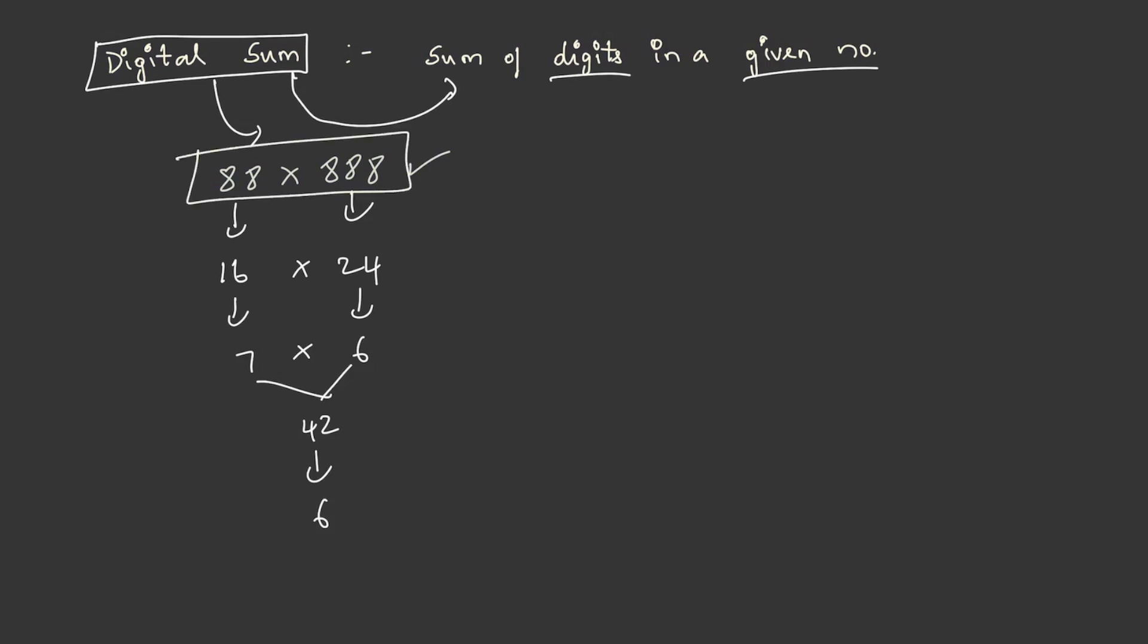Now, this is the question asked to you and options are given as such. A is given as 76137 and B is given as 77142, C is given as 87136 and D is given as 78144. You need to look at the sum of digits in each case. And in the last option, we get the sum of digits as 24, and on further doing this we get 2 plus 4 equal to 6. So 88 into 888 is equal to 78144. That is how you can solve by using digital sum concept.